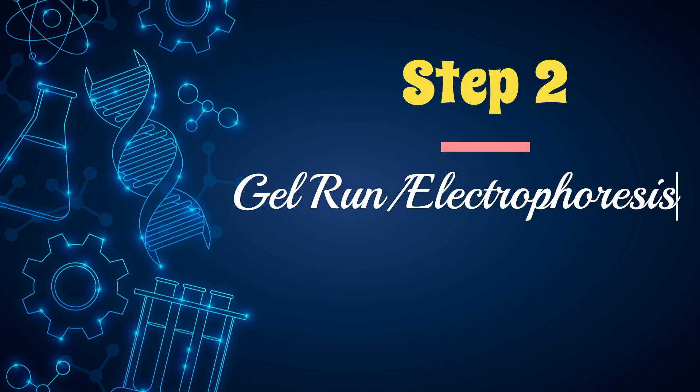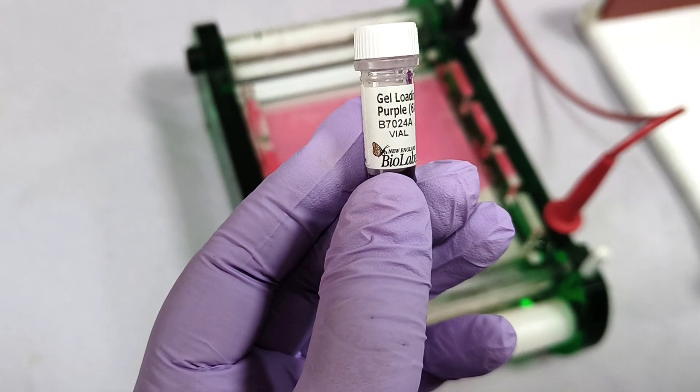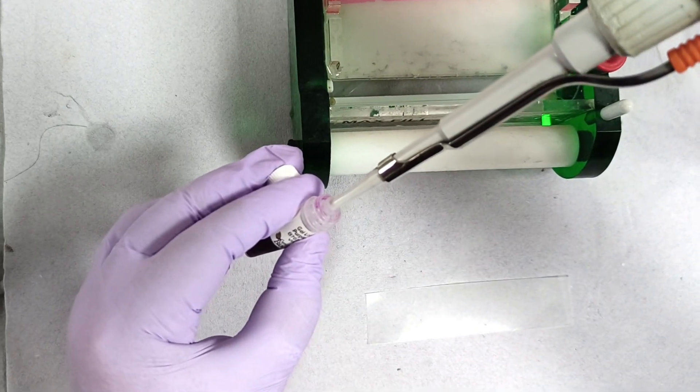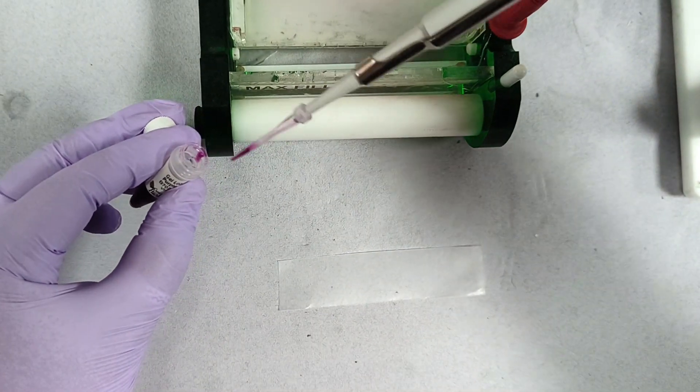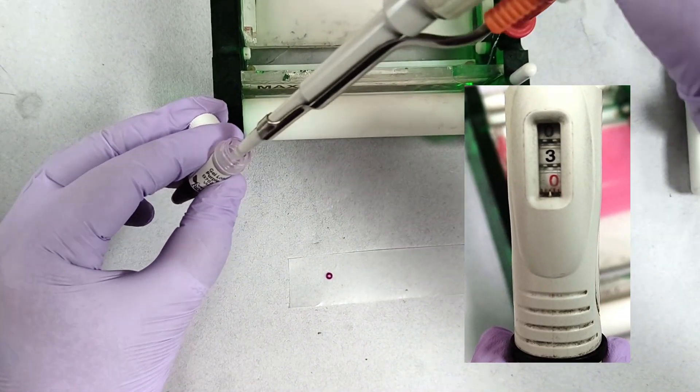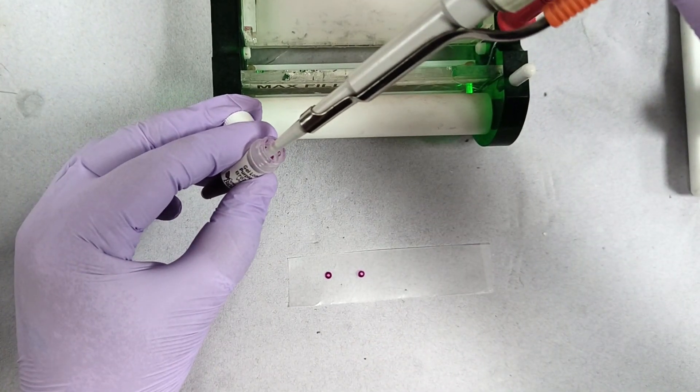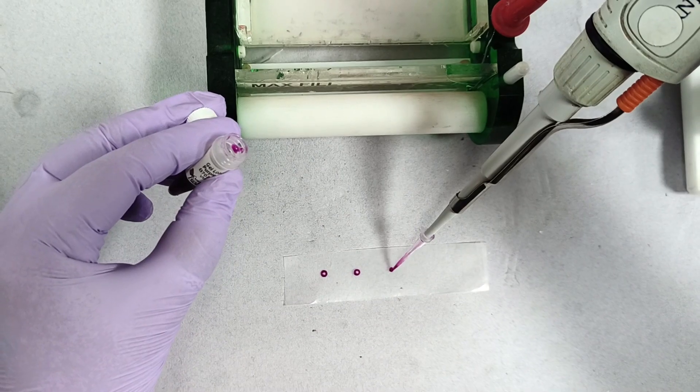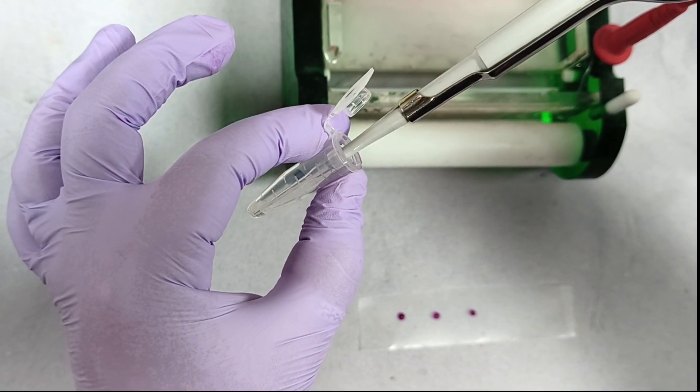Now let's proceed with gel run or electrophoresis. Before loading, mix loading dye to the samples. Loading dye provides density to the samples so that they sink in the well and do not come out. Place a parafilm, dispense 3 microliters of loading dye and then add the samples to it while mixing properly.